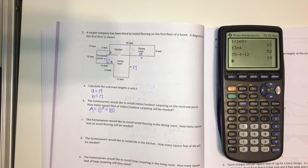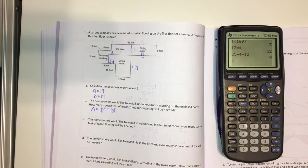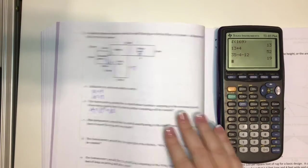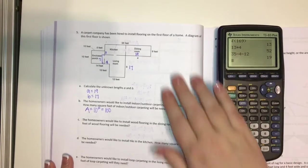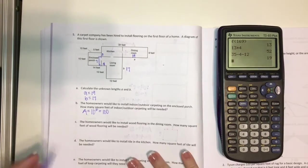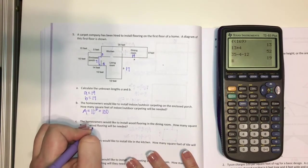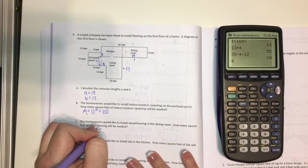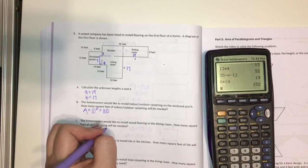The homeowners would like to install wood flooring in the dining room. How many square feet of wood flooring will be needed? So again, since we're installing flooring, that's the flat area. So the dining room, the dimensions are 8 by 19. So our area would be 8 times 19. And when I put that in my calculator, I get 152.